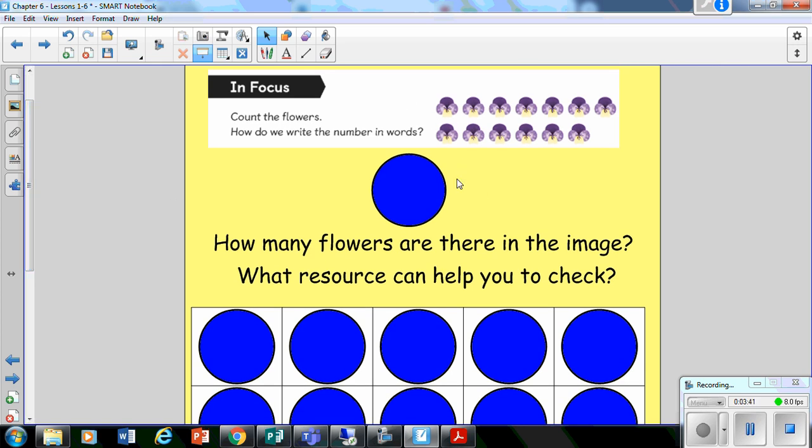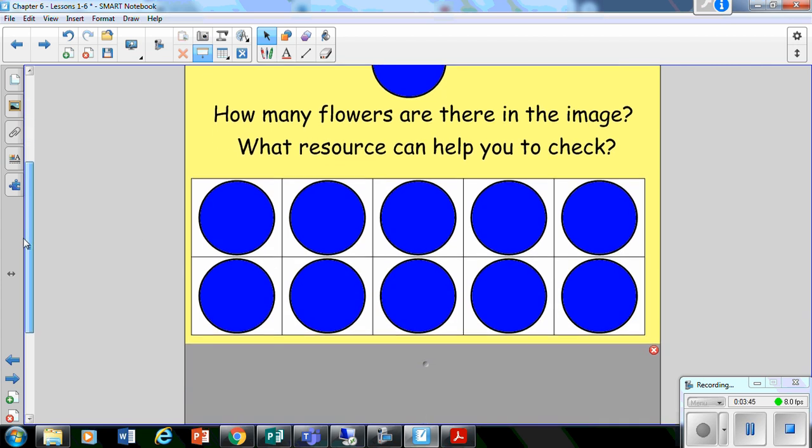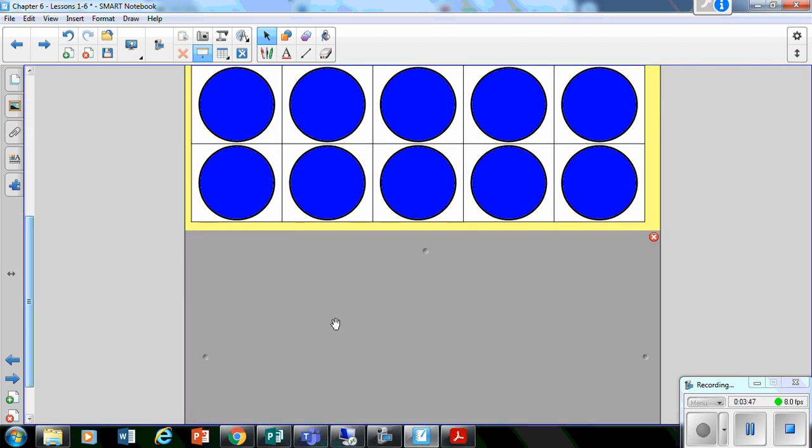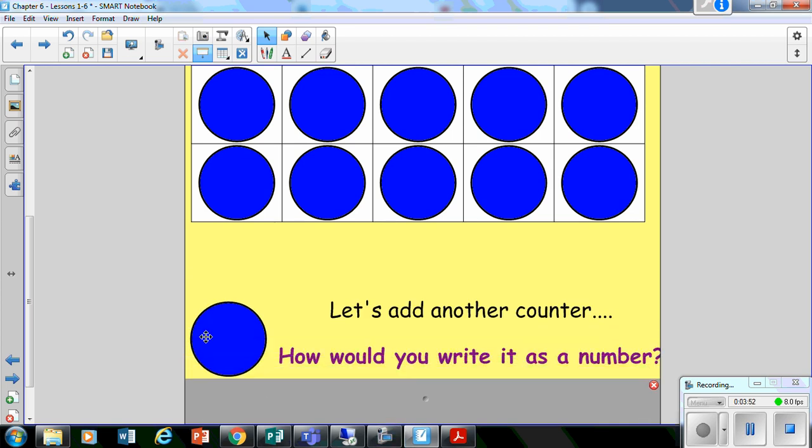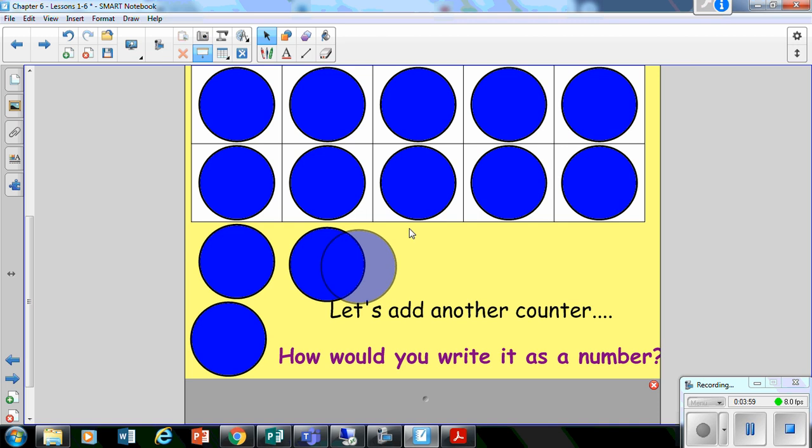Okay, so we've got our tens frame which is full. And I've got my counters here. So let's add my counters. I've got 10, 11, 12 and 13. Is that what you had as well? That's right, there are 13 flowers.